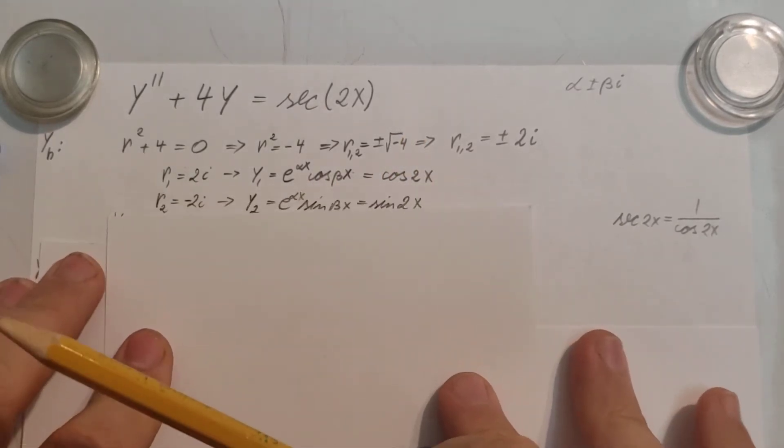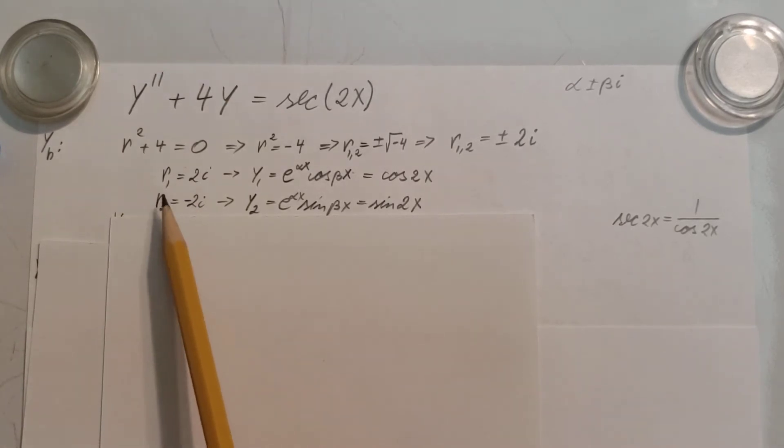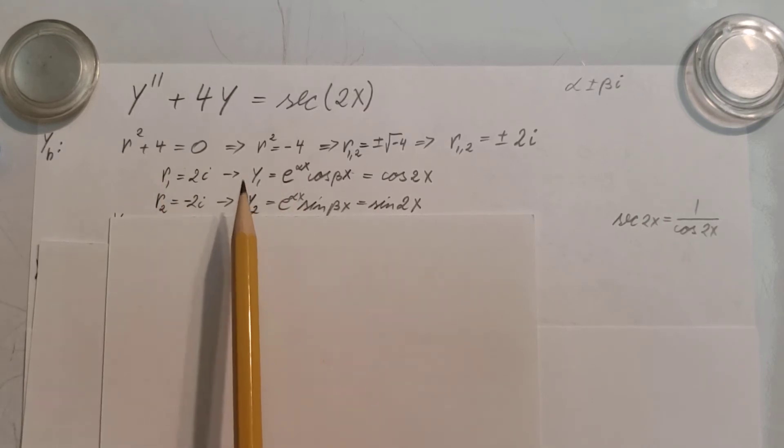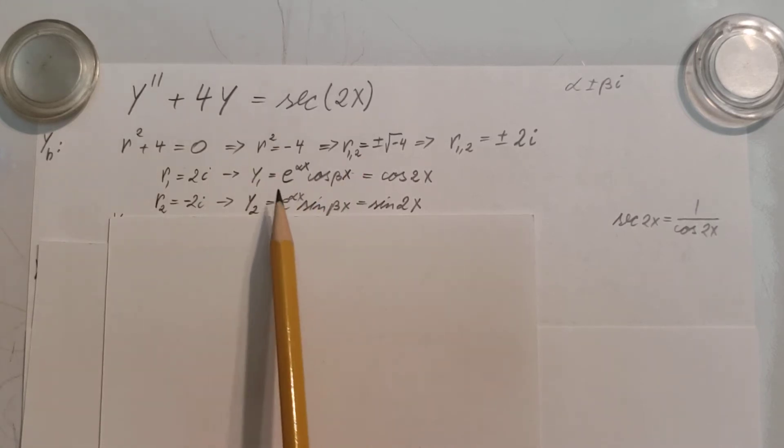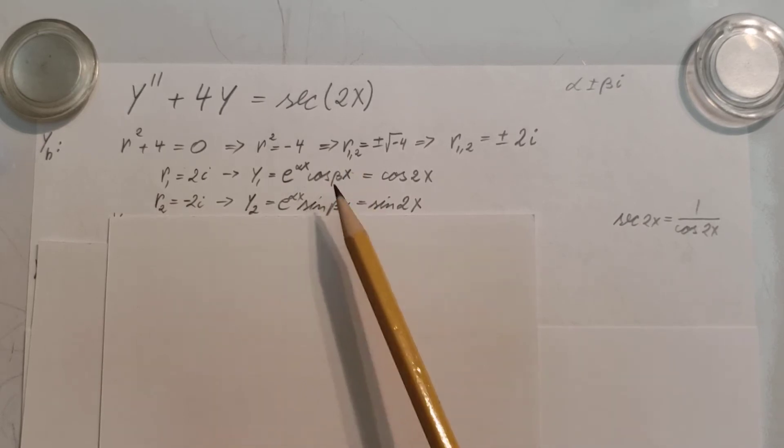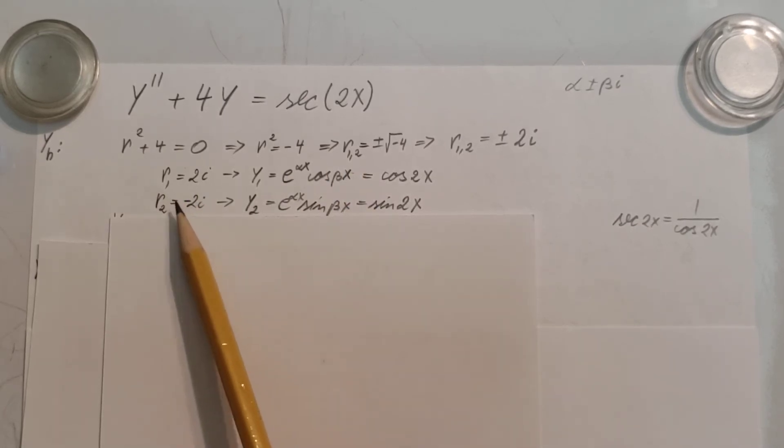Same thing I'm going to do for my second root, which is r2 = -2i. Now for the negative, we're going to be using the sine. So y2 = e^(αx)sin(βx). Alpha is 0 again, this part is 1, sine of 2x. The negative, that's why we are using the sine version, not the cosine.